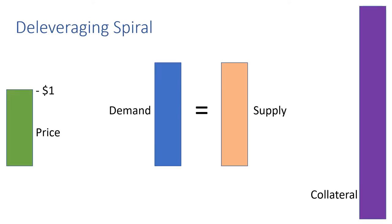Let's walk through how this works. Here we visualize price, demand, supply, and collateral value in this stablecoin system. Importantly, in equilibrium, demand is equal to supply, and let's say that starts at a dollar price.